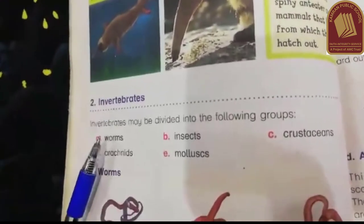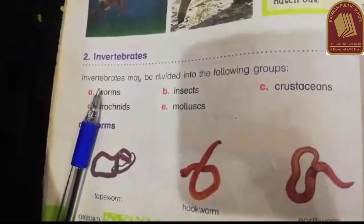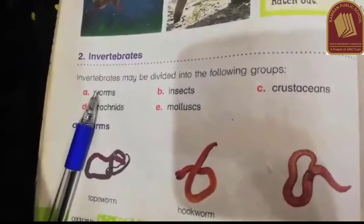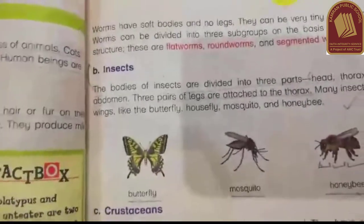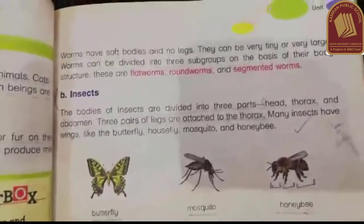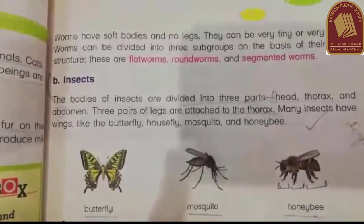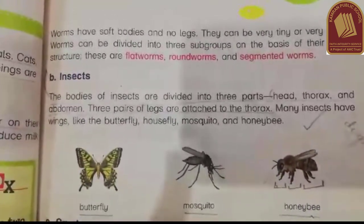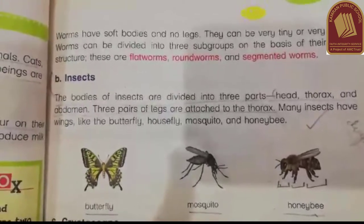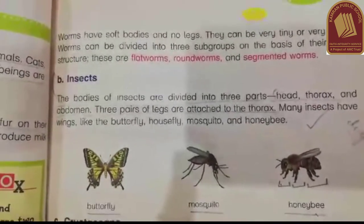The next group is invertebrates. Invertebrates are divided into five subgroups: worms, insects, crustaceans, arachnids, and molluscs. We studied that worms have very soft bodies and no legs. Worms are divided into three types: flat worms, round worms, and segmented worms.